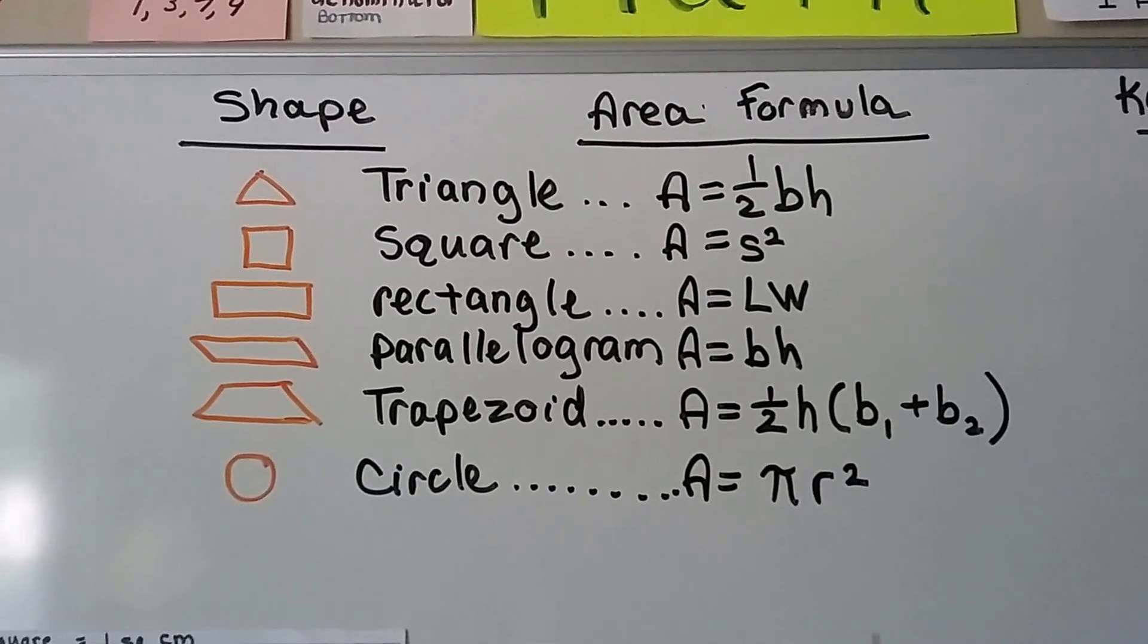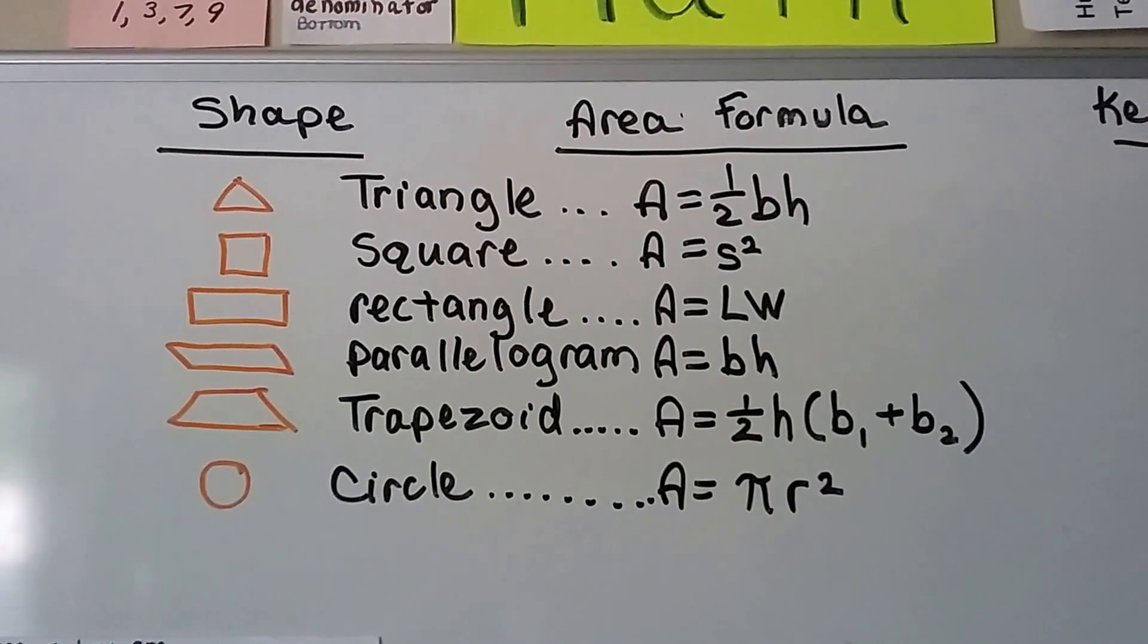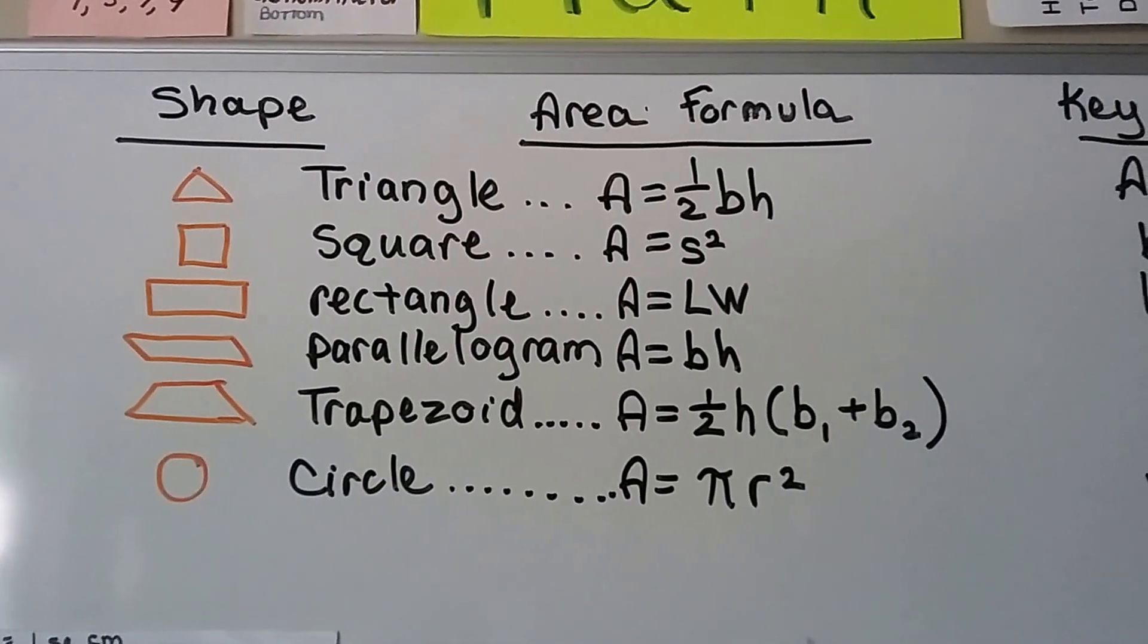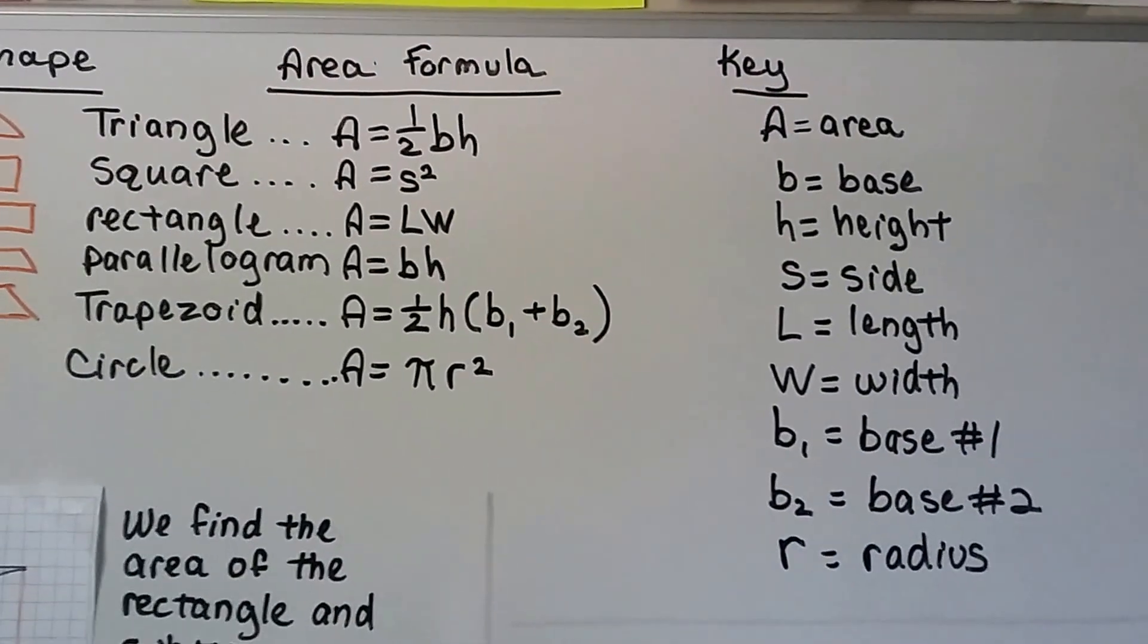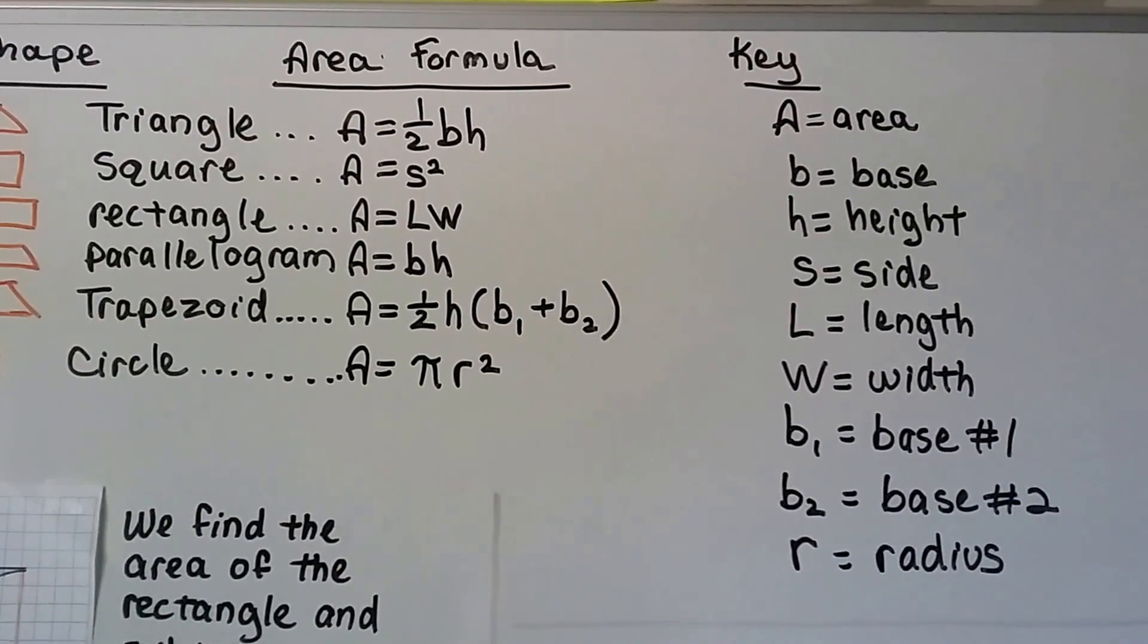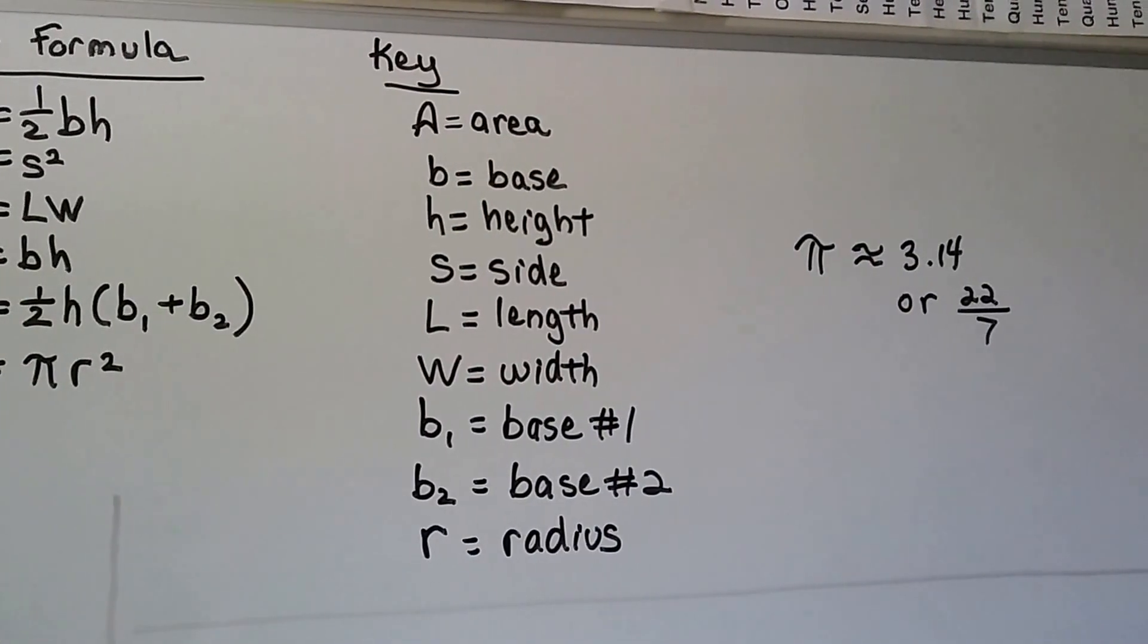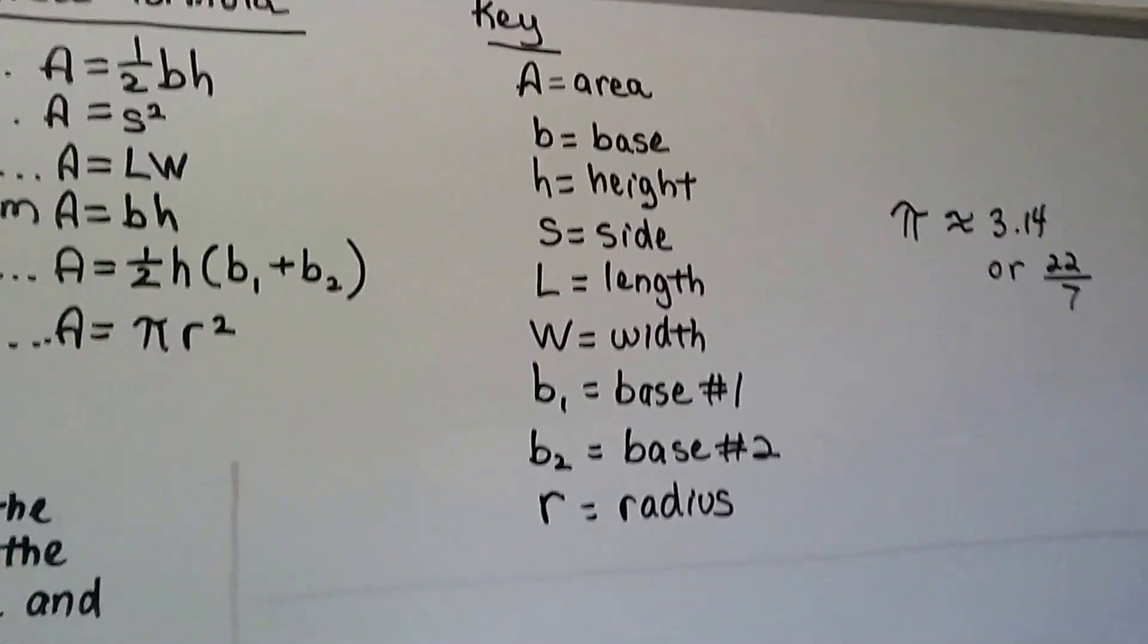You might want to write these down in the inside cover of your spiral or on your notes somewhere. They're usually found in your book or online, but it's very handy to have them close by. These are what those letters stand for—you should be familiar with them by now. Pi is approximately 3.14 or 22/7 as a fraction.